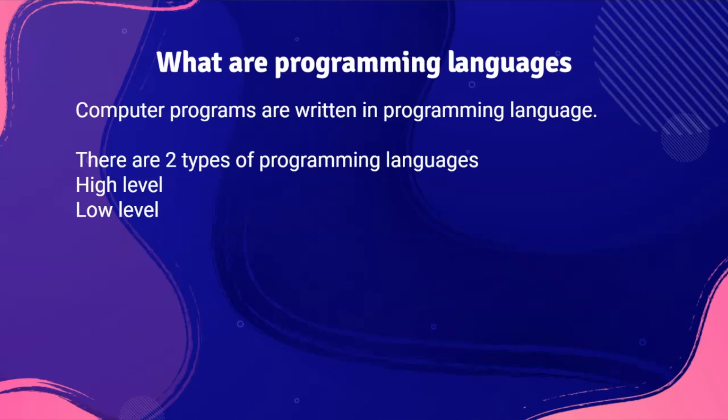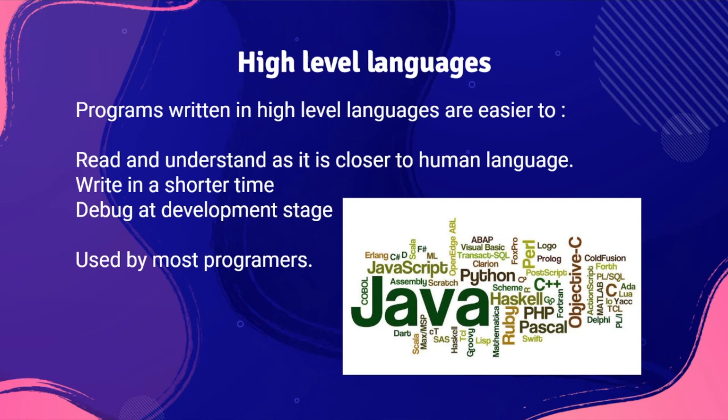So for a computer to understand, a program has to be translated from high level languages to low level languages. There are two types of programming languages: high level and low level.